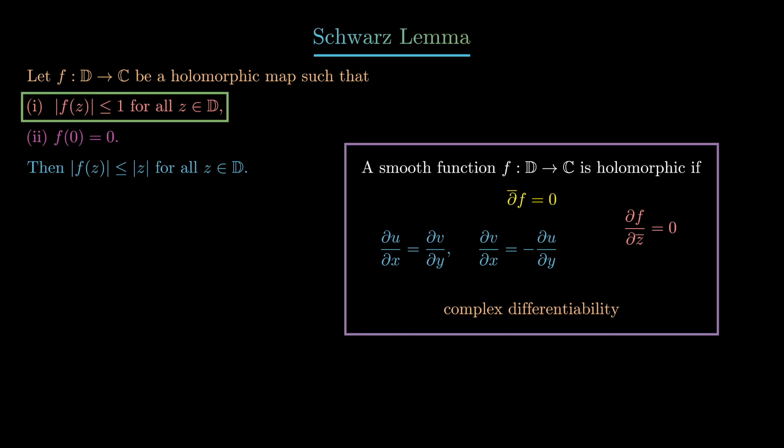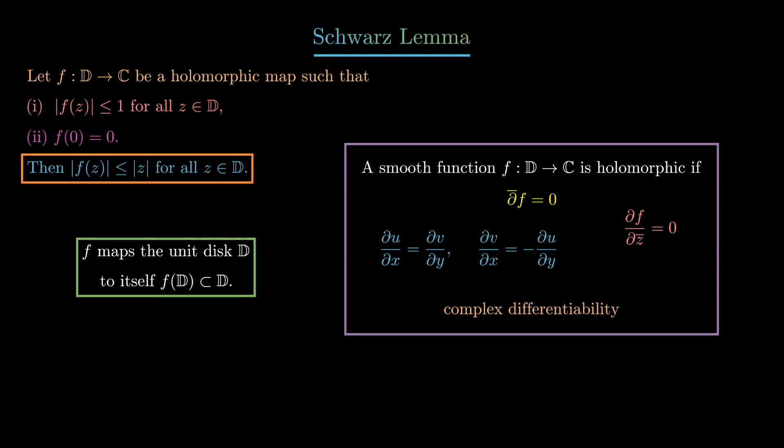If we look at this first condition, namely that the absolute value of f(z) is less than or equal to 1 for all z in the unit disk, that tells us that f maps the disk onto itself. So the image will be itself contained in the unit disk.